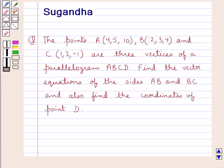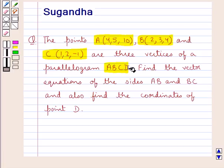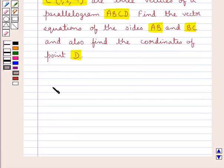Hello and welcome to the session. In this session we discuss the following question: the points A with coordinates (4, 5, 10), B with coordinates (2, 3, 4), and C with coordinates (1, 2, -1) are three vertices of a parallelogram ABCD. Find the vector equations of the sides AB and BC, and also find the coordinates of point D.